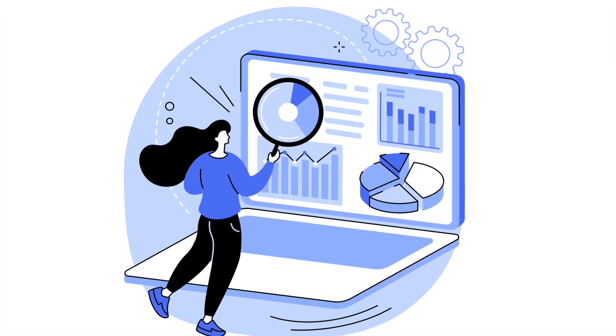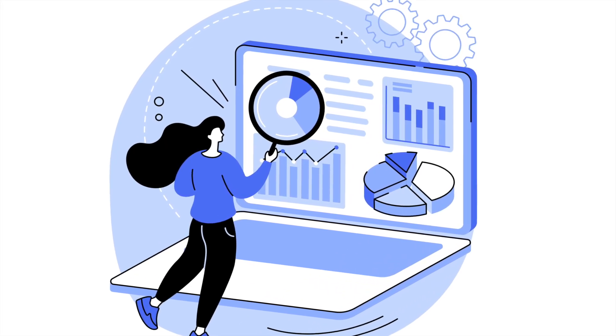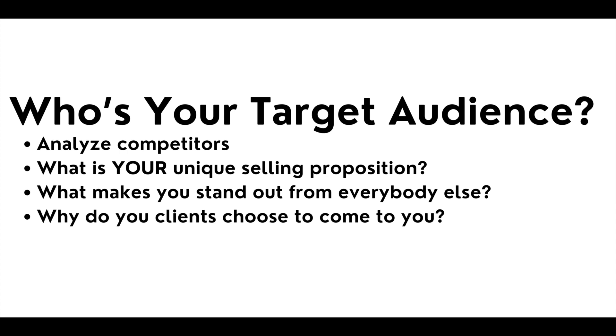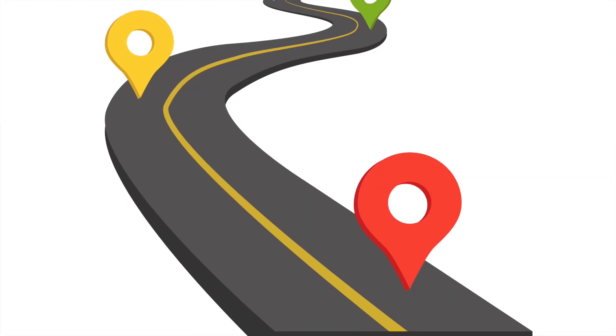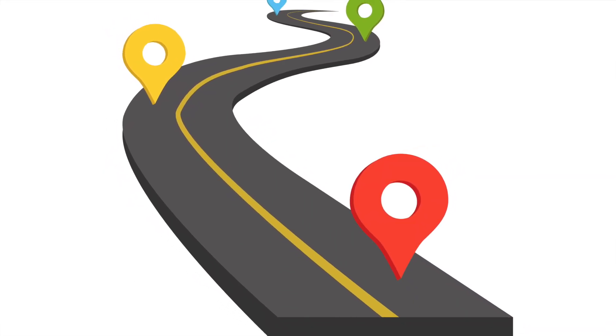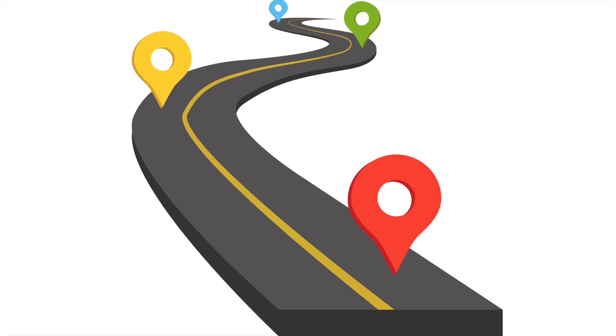After you have that idea, now it's time to do some research. So step number two, you got to do some research and some planning. You need to understand who your target audience is. You need to analyze your competitors that are in the market and you need to identify what your unique selling proposition is. What makes you stand out from everybody else? What makes you different from your competitors? What makes your clients and your customers want to come to you? This is where a solid business plan is essential. This basically acts as your roadmap. What you're going to do now, how you're going to do it, who you're going to do it for. It checks all those boxes and answers all those questions.